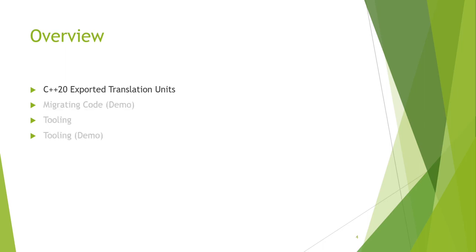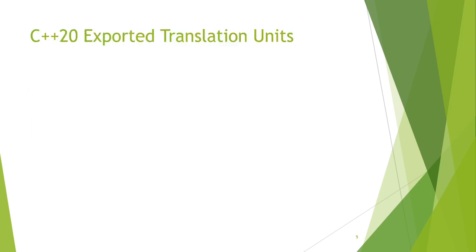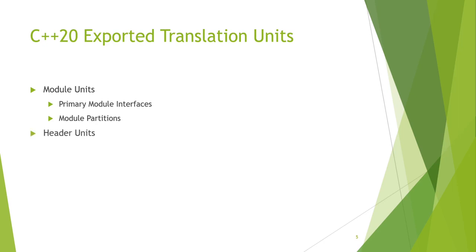Let's talk about C++20 exported translation units. I chose that wording very carefully. C++20 brings us named module units, as many people know, but it also affords C++ a more generalized notion of exported translation units. We have module units, which have two very common portions: primary module interfaces and module partitions. Finally, we have header units, which is the last form of exported translation unit that C++20 gives us.